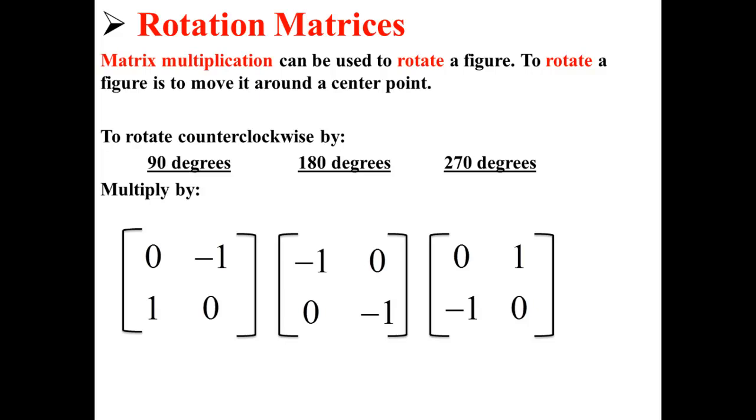Matrix multiplication can be used to rotate a figure. To rotate a figure is to move it around a center point. Here we have three different matrices that we can multiply by to rotate counterclockwise by either 90 degrees, 180 degrees, or 270 degrees.